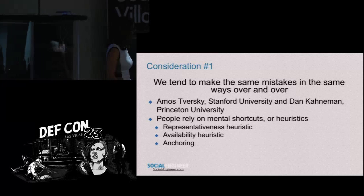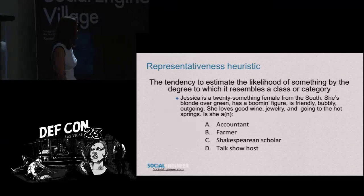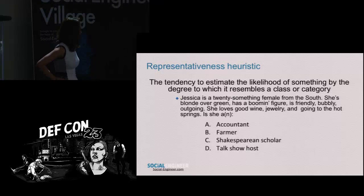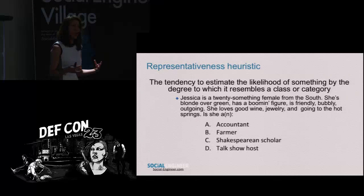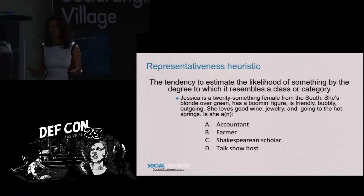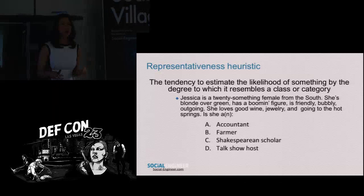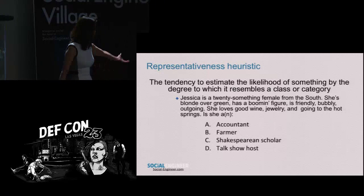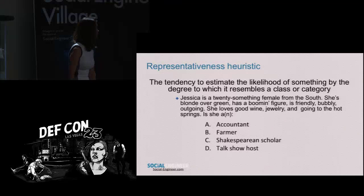So there are three different kinds here, which I'm going to talk about briefly. The representative heuristic is the tendency to estimate the likelihood of something by how much it resembles a specific category. So: I know a beautiful girl named Jessica — blonde hair, green eyes, great figure. She loves good wine, jewelry, going to the hot springs. Let me see a show of hands: is she an accountant? A farmer? An experienced scholar?